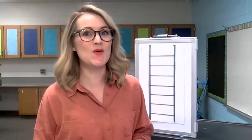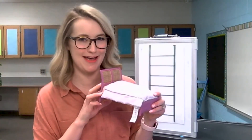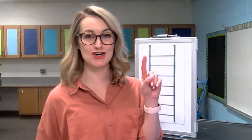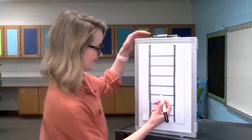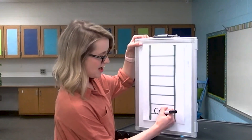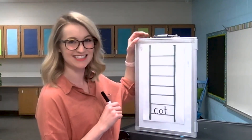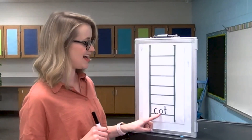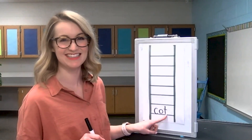The first word is the word cot. A cot is a small bed. Cot. Let's listen for the sounds: C-O-T. Cot. Let's write that down: C-O-T. Cot. Take your finger and let's check it: C-O-T. Cot. Great job.